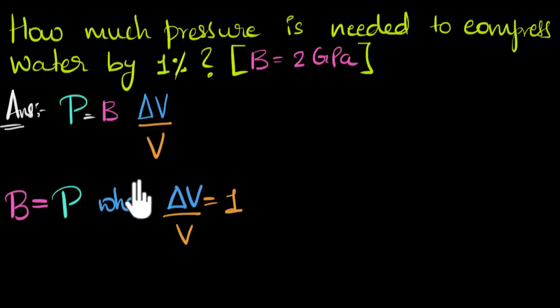But what does it mean for delta V over V to become one? Well, delta V is the change in volume. And of course, we're dealing with compression. That means the changes in volume are going to be negative. Our volume will decrease. So there must be a negative sign over here. But let's not worry about that too much. So delta V is the change in the volume, and V is the initial volume.